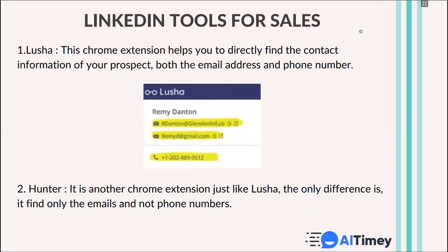The first LinkedIn tool that is very good and really important is Lusha. This Chrome extension helps you to directly find the contact information of your prospect — both email addresses and phone numbers. Download and activate this extension, and when you visit anyone's profile on LinkedIn, it will gather that person's information — mainly email addresses and phone numbers. So you can get a lead just by visiting your client's profile. As simple as that.